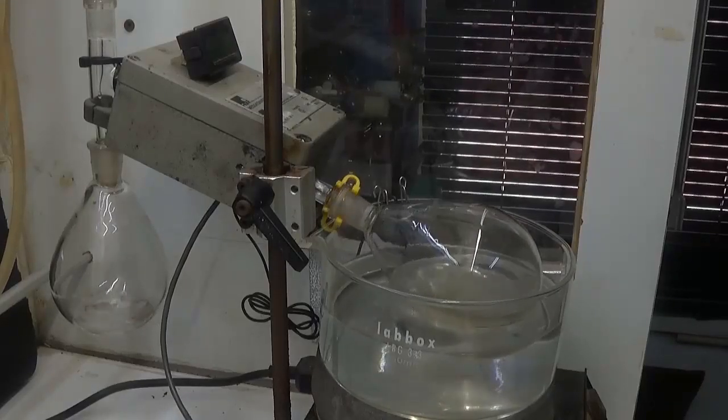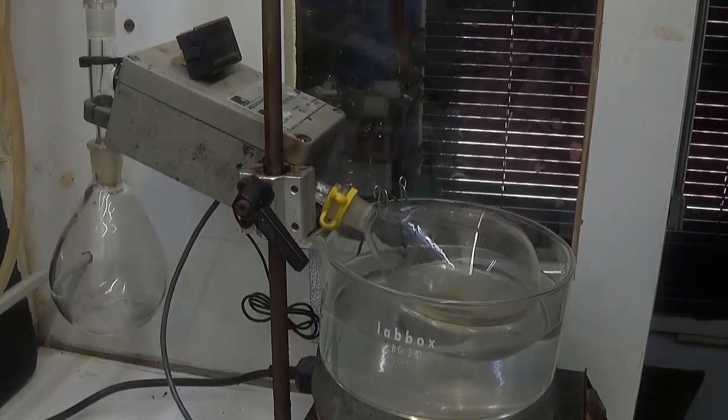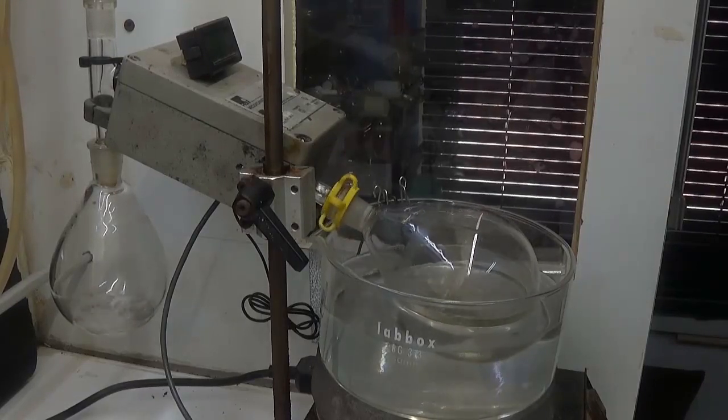Evaporate the cyclohexane in a rotary evaporator with vacuum and leave the product in an 80 degree oven to remove traces of solvent.